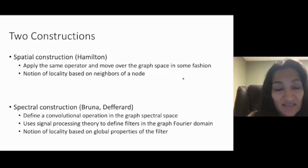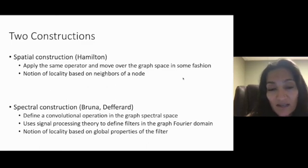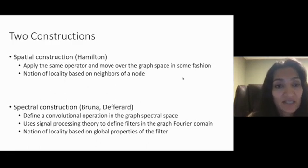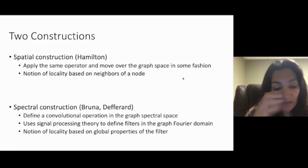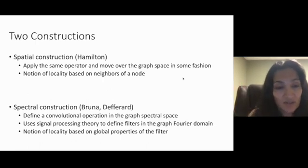There are two kinds of constructions that have become popular for achieving these kinds of features in a graph-based neural network. The first is a so-called spatial construction. Here, very much looking at a graph spatially or in the vector space of a graph. You have operations that look at each vertex and its neighbors, aggregate them in the graph spatial domain.